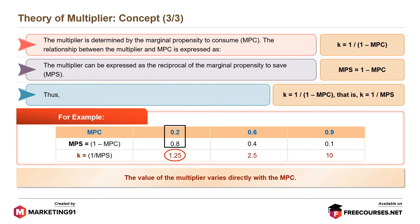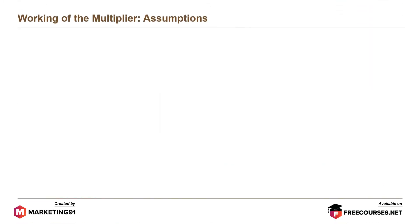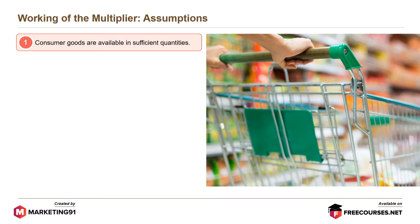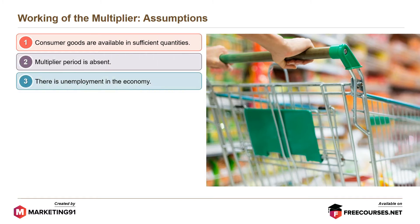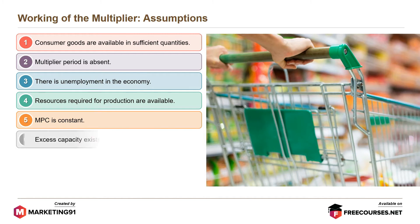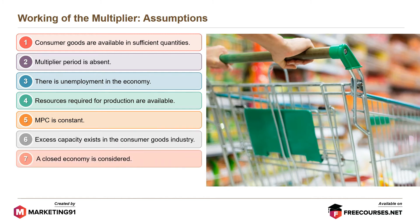The value of the multiplier varies directly with the MPC. Now let's understand the working of a multiplier. The assumptions are: consumer goods are available in sufficient quantities, multiplier period is absent, there is unemployment in the economy, resources required for production are available, MPC is constant, excess capacity exists in the consumer goods industry, a closed economy is considered, and there should be a net increase in investment.